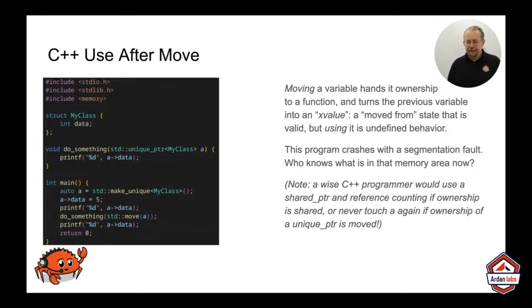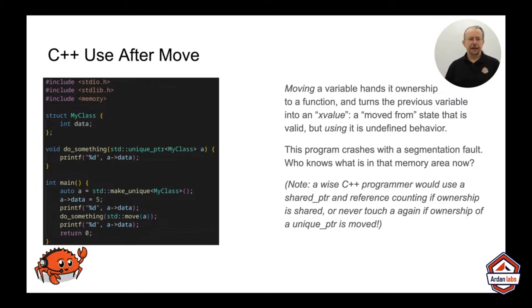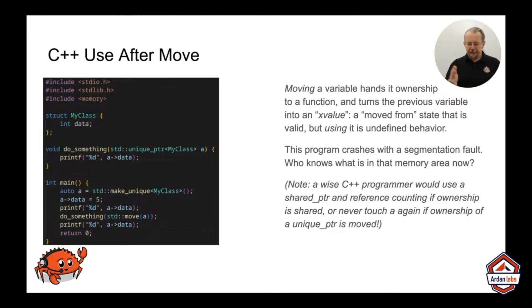C++ introduced this and because of the way unique_pointer works, if you want to be moving your data around, you have to move the ownership of unique_pointer — because unique_pointer, like Rust, has the concept that I own this variable. When I move it to someone else, it becomes their problem. Or I drop it, stop using it, it goes out of scope — it will be deleted.